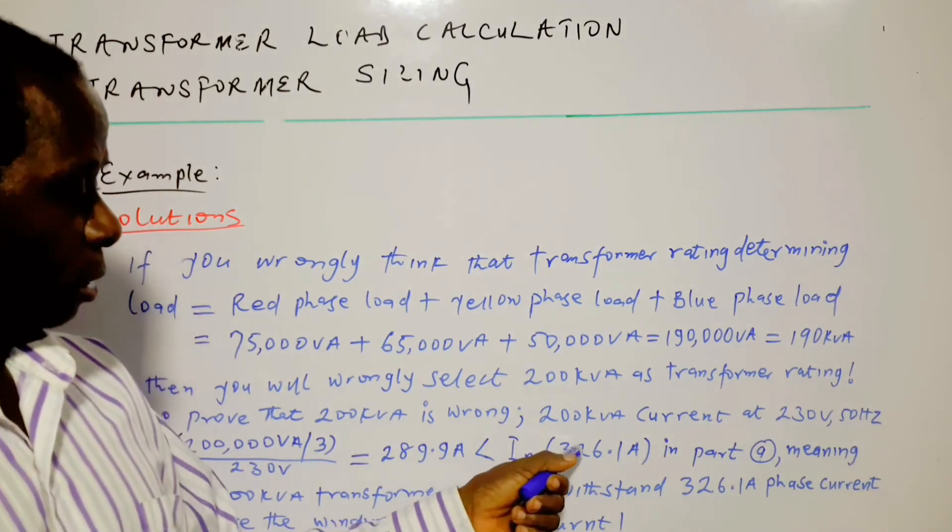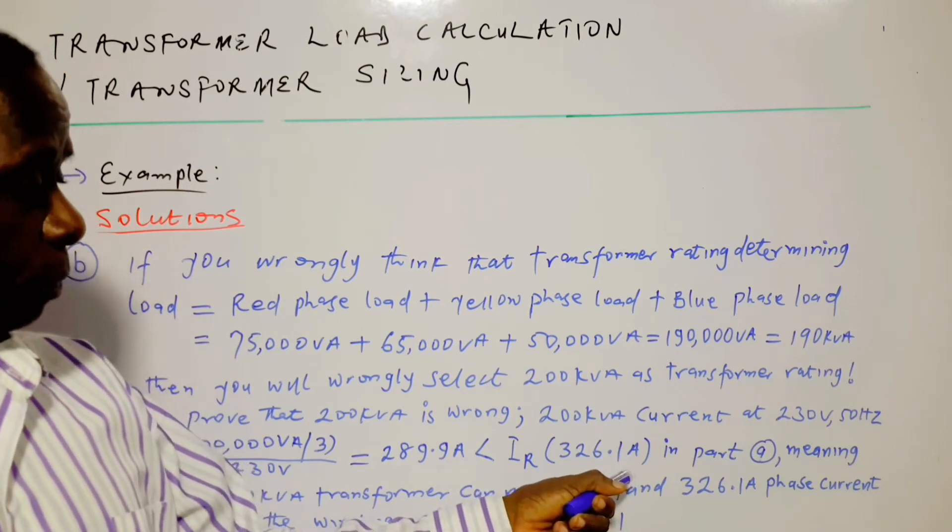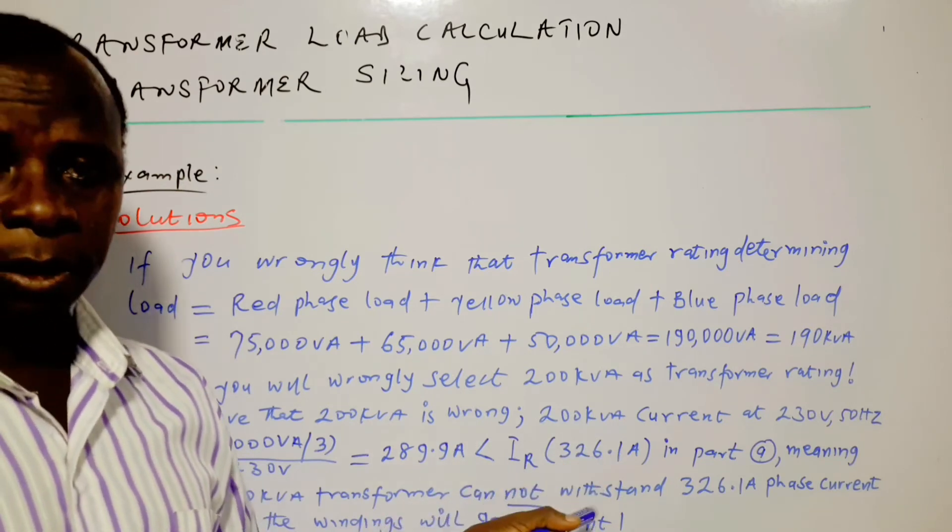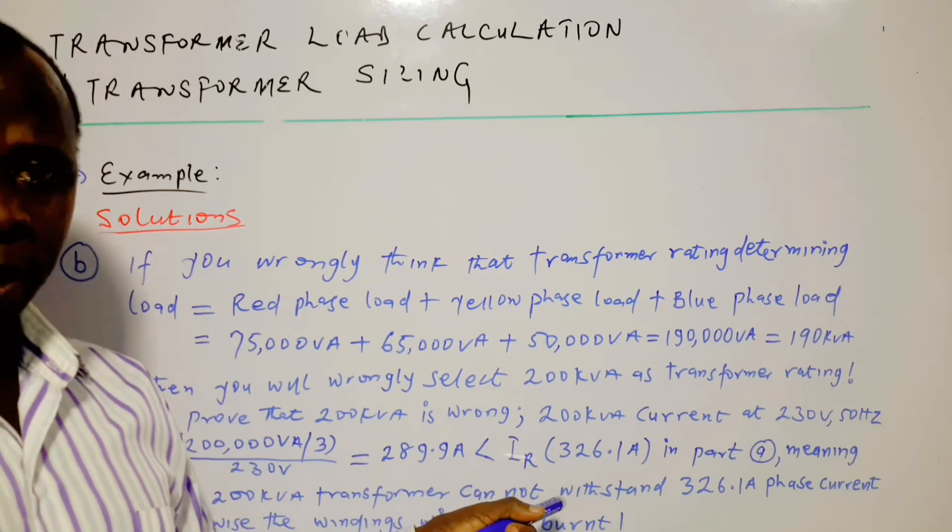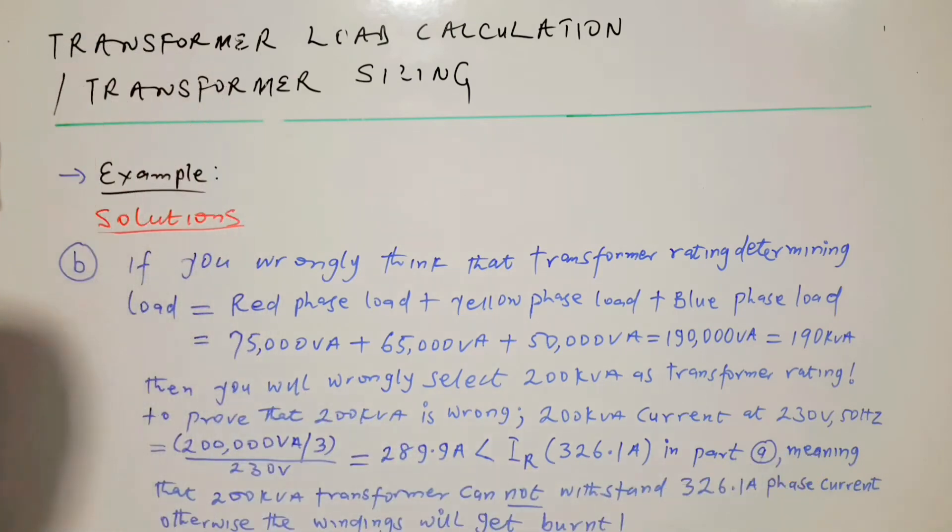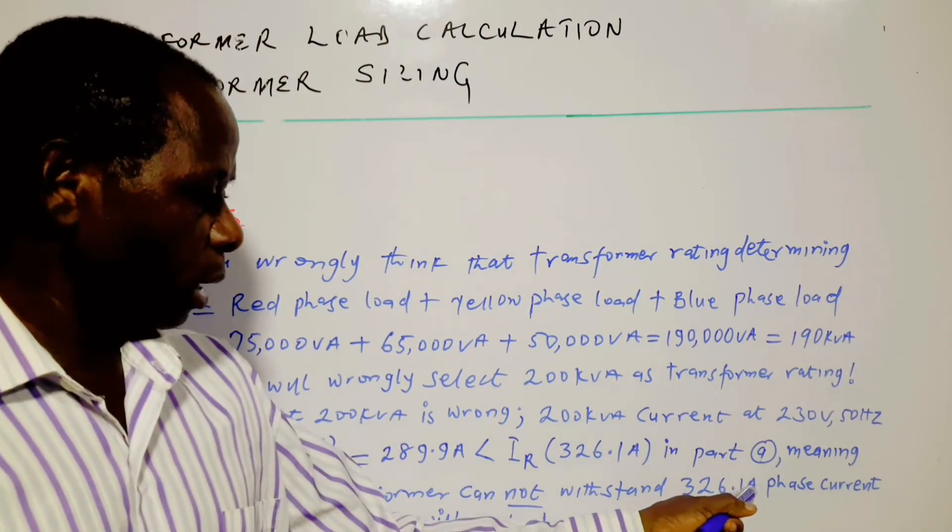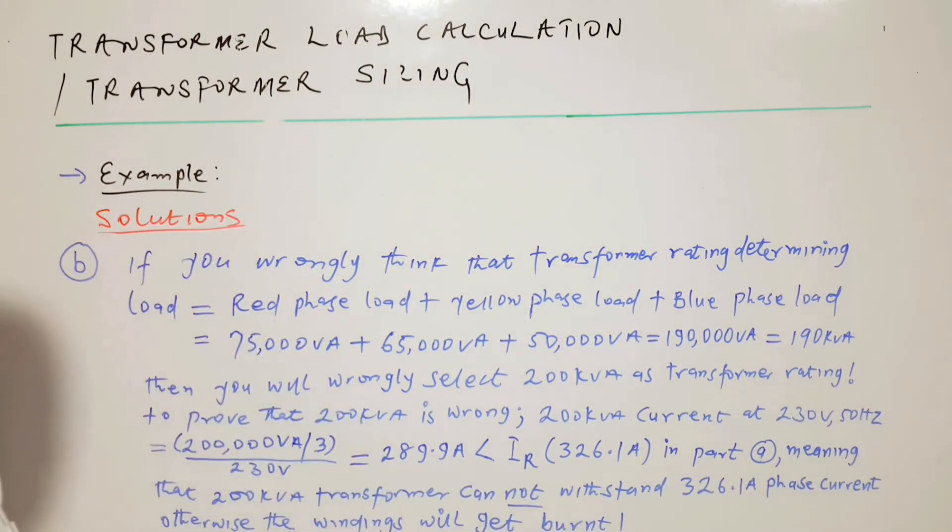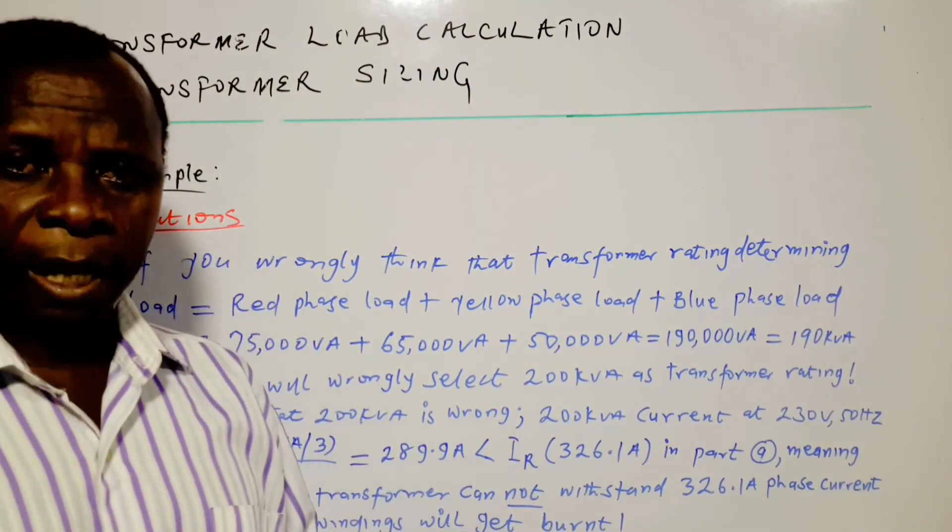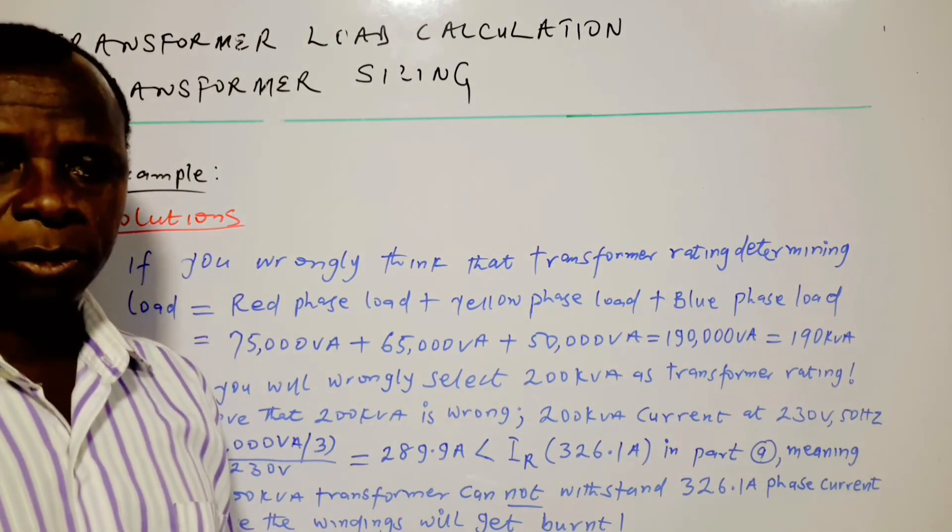Which is less than IR, which is 326.1 ampere in part A. And this 326.1 ampere in part A is the power requirement current for the red phase. And this is meaning that 200 kVA transformer cannot withstand 326.1 phase current. Otherwise, the windings will get burnt. So what is happening here is that clearly, 200 kVA transformer is not the right selection. So we move on and see what the right selection will be.